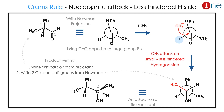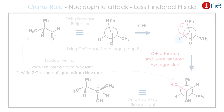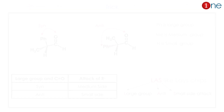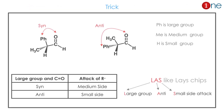Then CH3 minus attacks — you have to predict which side it attacks. Both side attacks are possible, but CH3 attacks on the small, less hindered side, where hydrogen is present. The C=O becomes C-OH. When you write it in the Fischer projection, you will have only one major product, which is methyl above.